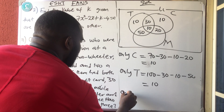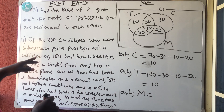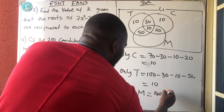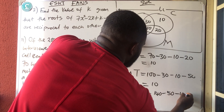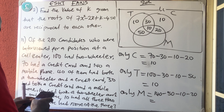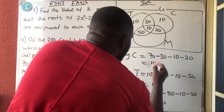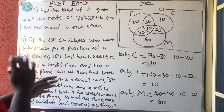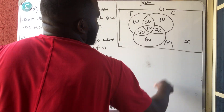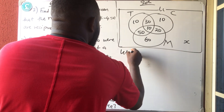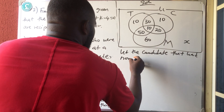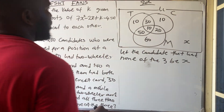The next one is only mobile phone. 140 had mobile phone — they did not say only — so only mobile phone equals 140 minus everything that entered inside mobile phone: minus 50, minus 10, minus 20, giving 60. The candidates that did not come with anything at all — let that be X, kept outside the circles. Let the candidates that had none of the three be X.